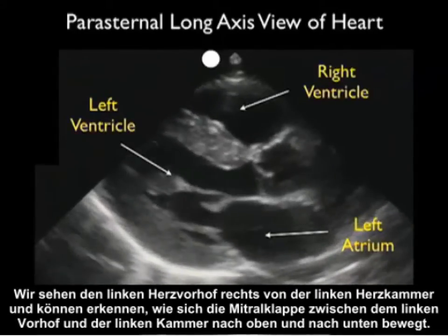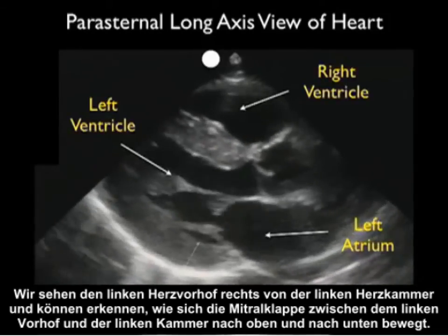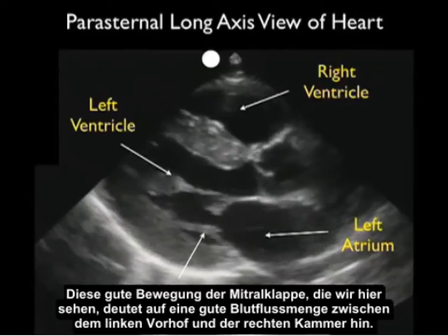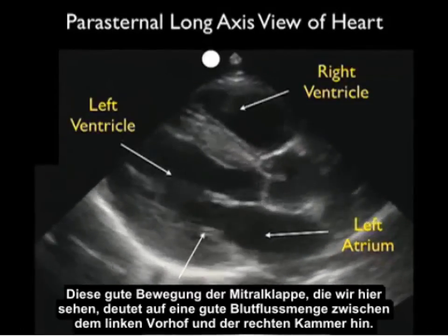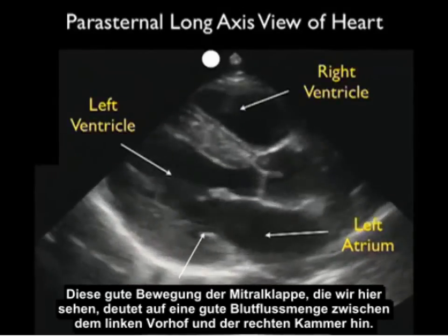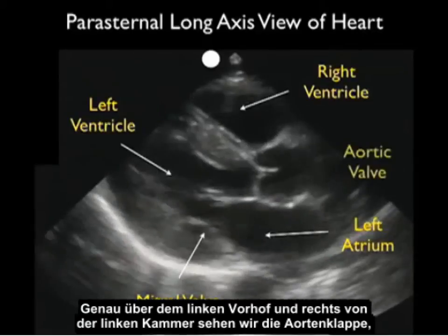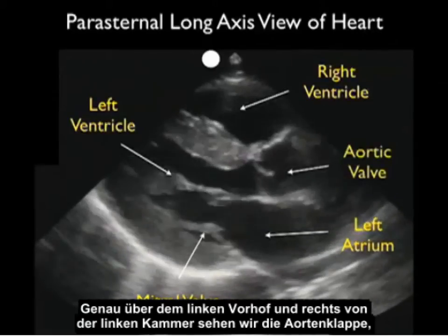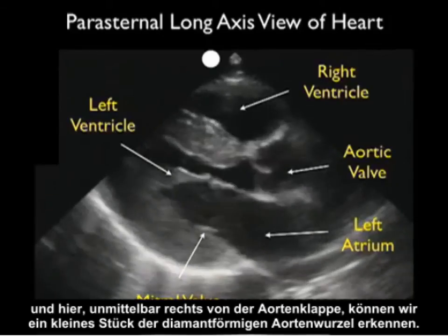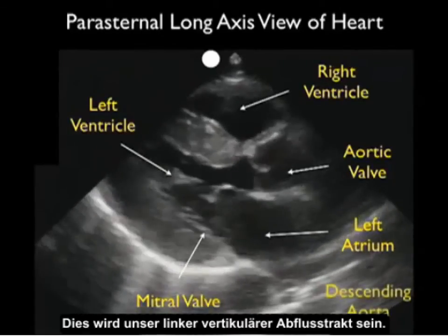We see the left atrium to the right of the left ventricle, and notice the mitral valve flipping up and down in between the left atrium and left ventricle. There is good movement of the mitral valve, indicating a good amount of blood flowing between the two chambers. Just above the left atrium and to the right of the left ventricle, we see the aortic valve, and just to the right of it, a little bit of the diamond-shaped aortic root — this will be our left ventricular outflow tract.